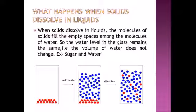For example, sugar and water. The red color molecules in this diagram are molecules of sugar and the blue color molecules are molecules of water. When we mix sugar and water, the red molecules — sugar molecules — occupy the spaces in between the water molecules. All these molecules get mixed, with sugar molecules taking place in the empty spaces between the water molecules. So the water level remains the same — the volume of water does not change.